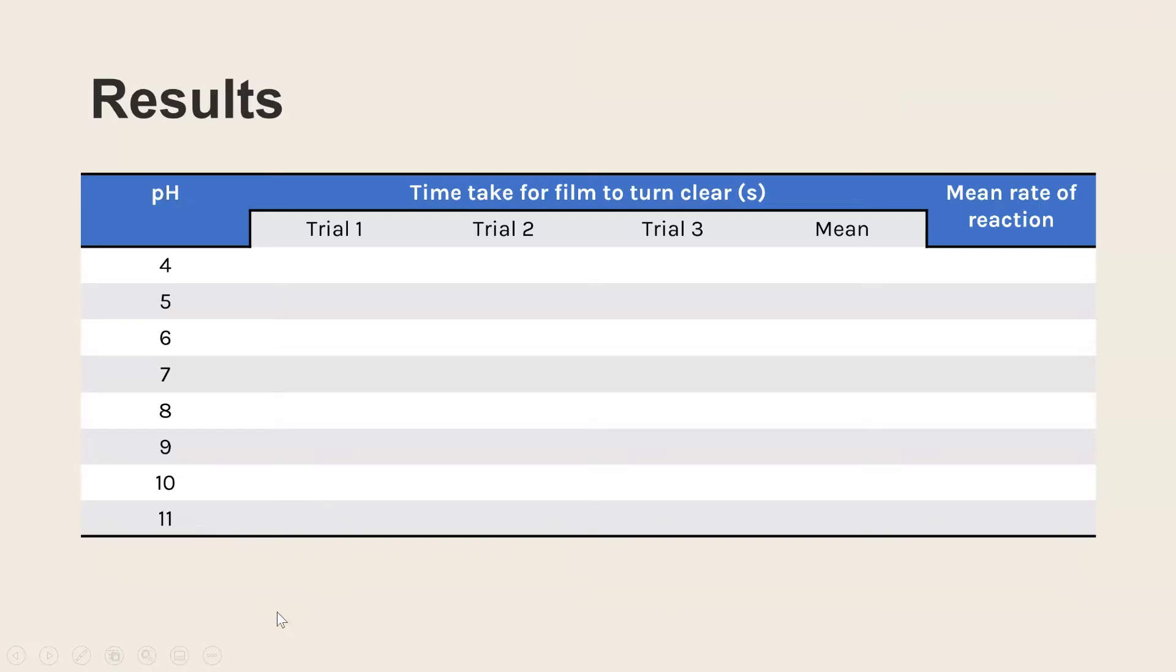To record the results I've designed a table here. These are the pHs that I'm testing and I'm going to do three trials and then calculate a mean and then use that mean to work out the rate of reaction. So here are the results that I got when I did this experiment and you can see at pH 4 for every time taken I've written infinity so it never changed, but for all of the others it did eventually change and we did get that endpoint and we've got our varying times.